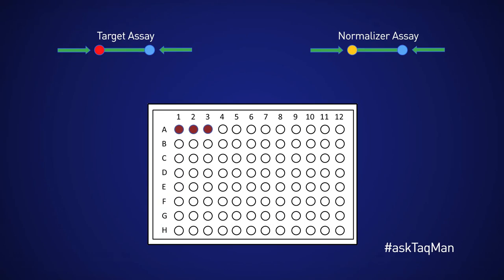Maybe. Here's the concern. When two assays share a well, they compete for the same pool of common reagents, including enzyme and DNTPs.